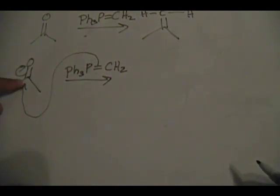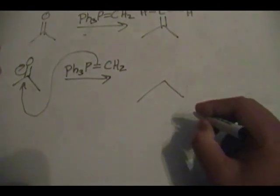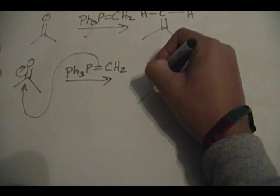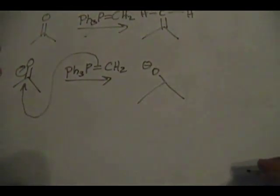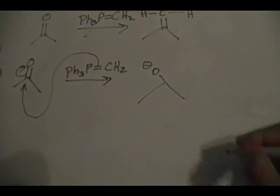The nucleophile comes and attacks the electrophilic site. So it starts off like this: the pi electrons attack the carbon of the carbonyl, and you shift the pi electrons from the carbonyl to the oxygen.